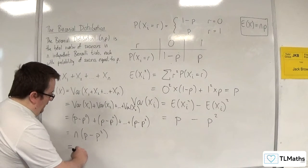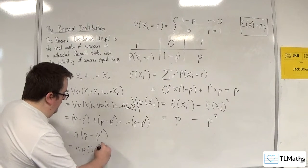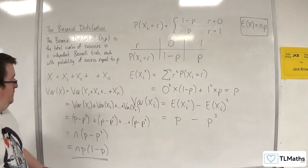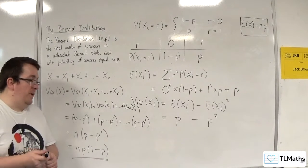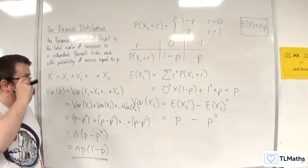If you factorize this, you can factor out the p, and you're left with 1 minus p. And there is the formula for the variance of the binomial distribution with n independent trials and probability of success p.